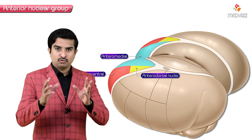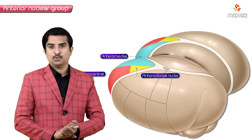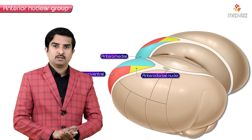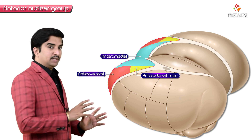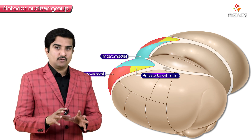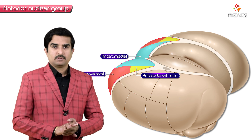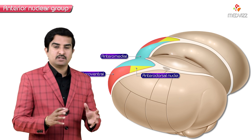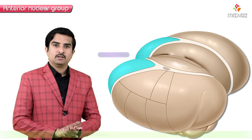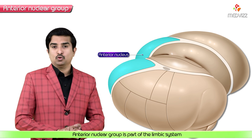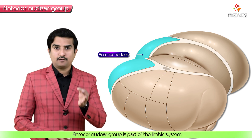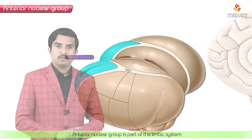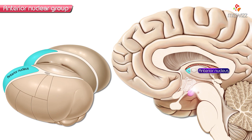There are three subdivisions in the anterior nucleus of the thalamus. We are not going to discuss the individual connections of these three parts, but simply note how many subdivisions are present. The anterior nuclear group is a part of the limbic system.